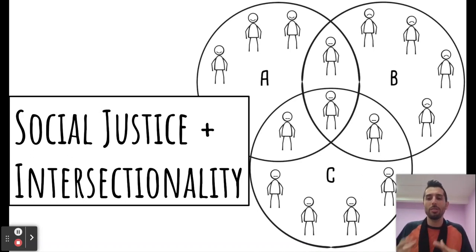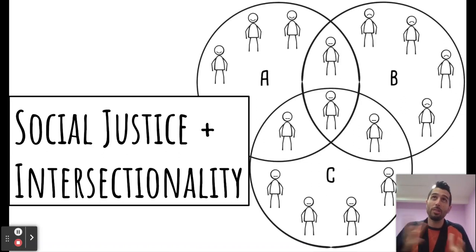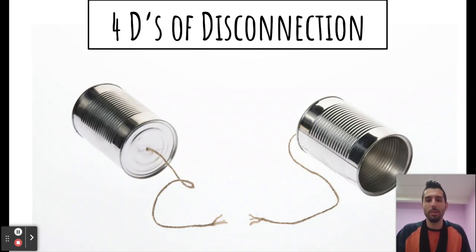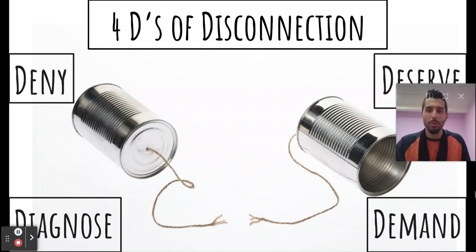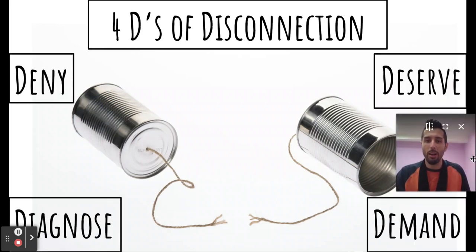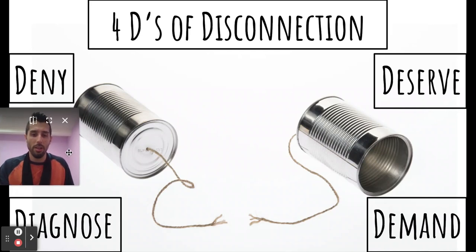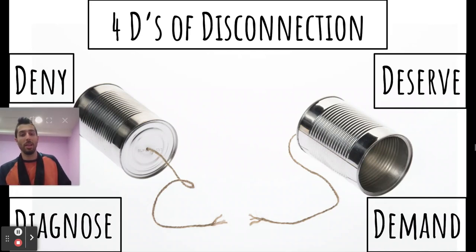What other lessons from social-emotional learning can we pull, and how might that play out? Let's talk about what allows for conflict in an individualist social-emotional learning setting. That brings me to the four D's of disconnection, which comes from the work of Marshall Rosenberg and nonviolent communication. The four D's are: deny, deserve, diagnose, and demand.